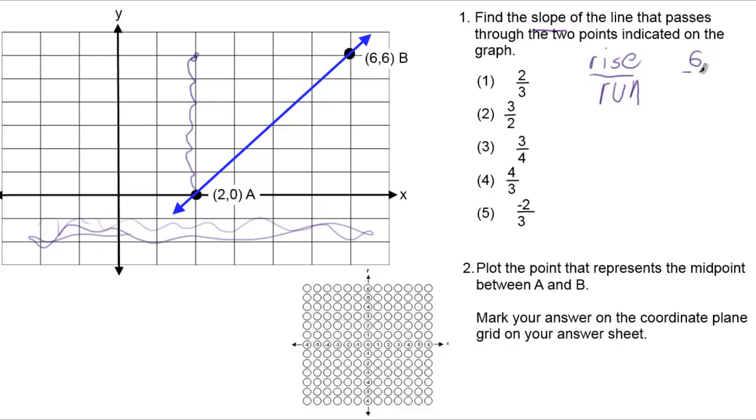Now we need to find the run. So it's easy just to count sometimes, and fastest: 1, 2, 3, 4. 6 over 4.